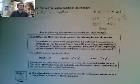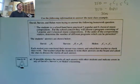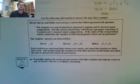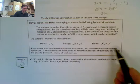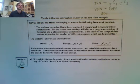Now let's take a look at my last example. David, Steven, and Helen were trying to answer the following question. The students in a school band practice five popular and six classical compositions. For the school concert, they will choose a program consisting of three popular and two classical music compositions. If the order of the compositions matters, determine the number of different programs to be presented. Each student was convinced their answer was correct and asked their teacher to check their work. The teacher asked the students to write down their answers on the board and asked the class to discuss which merits each answer.